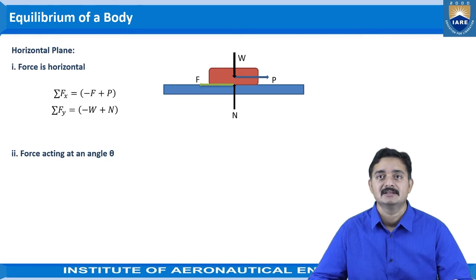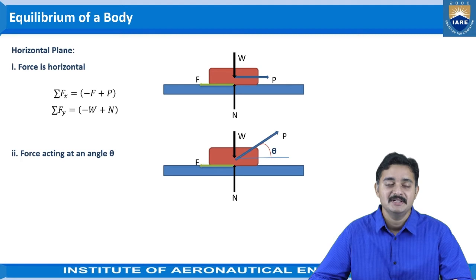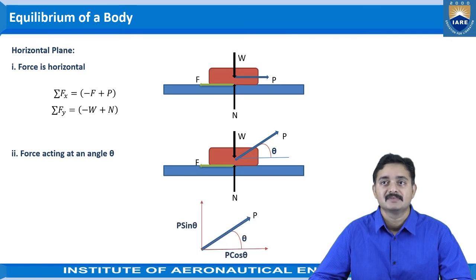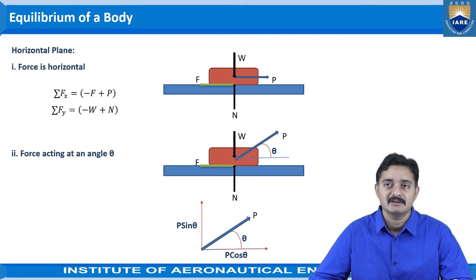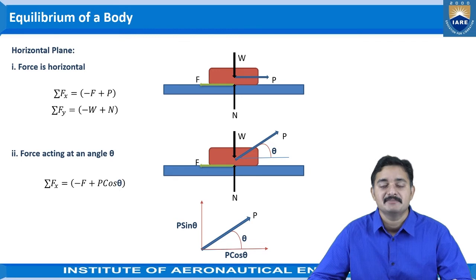Now consider the force P acting at an inclination of theta to the horizontal. In the previous case the applied force was horizontal, but here the force P is applied at an inclination of theta to the horizontal. For equilibrium conditions, we resolve the inclined force P into mutually perpendicular components. The sum of horizontal components is written as minus F plus P cos theta.